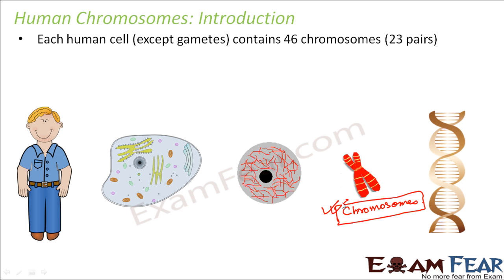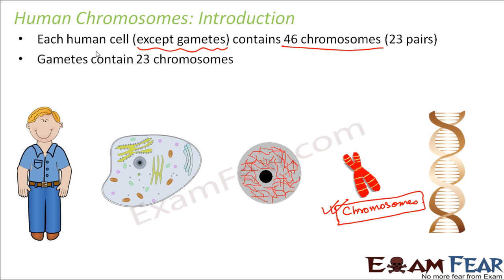In higher classes when you learn about genetics you will see how important chromosomes are. For now, what I want to explain is that every human cell contains 46 chromosomes — this number is fixed. All the cells in our body contain 46 chromosomes. The only exception is the gametes, that is the sex cells. A male produces sperm and a female produces ovum. Sperm and ovum contain half the number of chromosomes — that is 23 chromosomes. So all body cells have 46 chromosomes existing in pairs, making 23 pairs. Only the gametes have half that number.